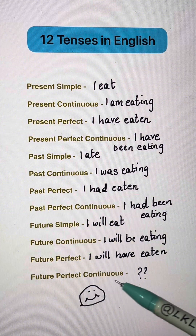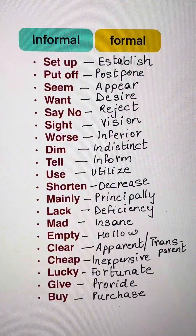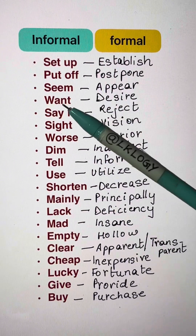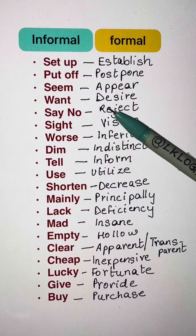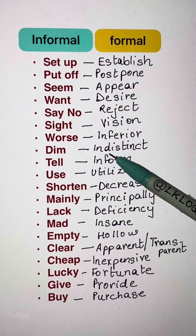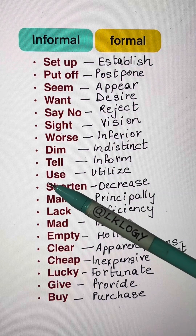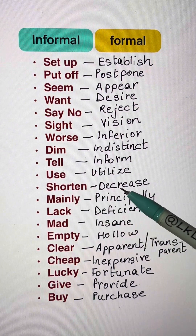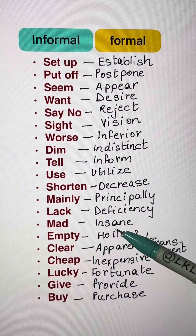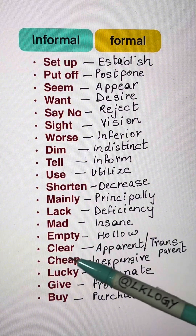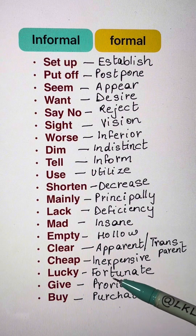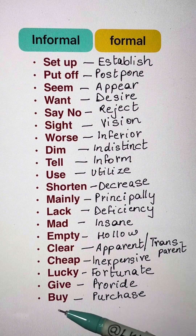Future perfect continuous. Vocabulary synonyms: set up / establish, put off / postpone, seem / appear, want / desire, say no / reject, sight / vision, inferior / dim / indistinct, tell / inform, use / utilize, shorten / decrease, mainly / principally, lack / deficiency, mad / insane, empty / hollow, clear / apparent / transparent, cheap / inexpensive, lucky / fortunate, give / provide, buy / purchase.